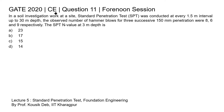This is Question 11 of the Civil Engineering paper of GATE 2020 forenoon session. In a soil investigation work at a site, a standard penetration test was conducted at every 1.5 meter interval up to 30 meter depth. The observed number of hammer blows for three successive 150 millimeter penetrations were 8, 6, and 9 respectively. The SPT N value at three meter depth is to be determined from four given options.